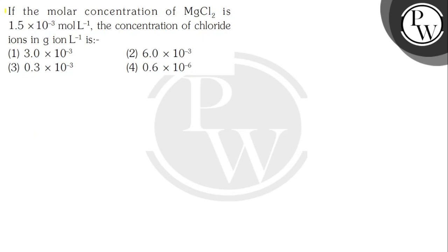Hello Achyong, let us see the question says, if the molar concentration of MgCl2 is 1.5×10^-3 mol/L, the concentration of chloride ion in gram per liter is: